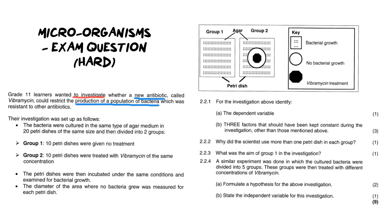It said the investigation was set up as follows. Now it's important to take note of what they did and how they set it up. The bacteria was cultured in the same type of agar medium. Remember agar is like a gel in 20 petri dishes. They were all the same size and then they were divided into two groups. One group received no treatment and the second group was treated with vibramycin all of the same concentration. You'll see now why I'm highlighting all these things that they kept the same all the way through. Remember those are our fixed variables.